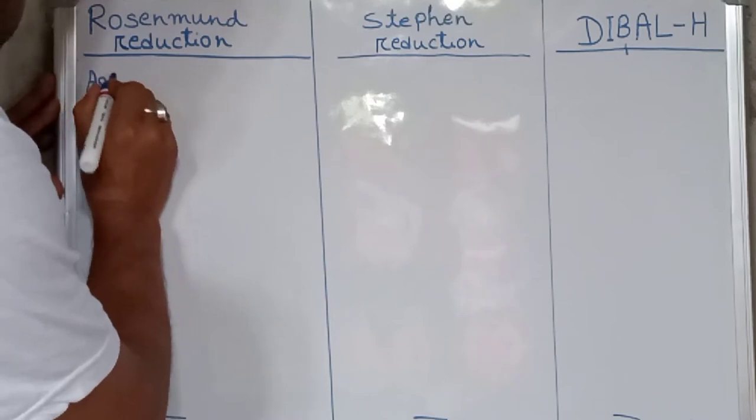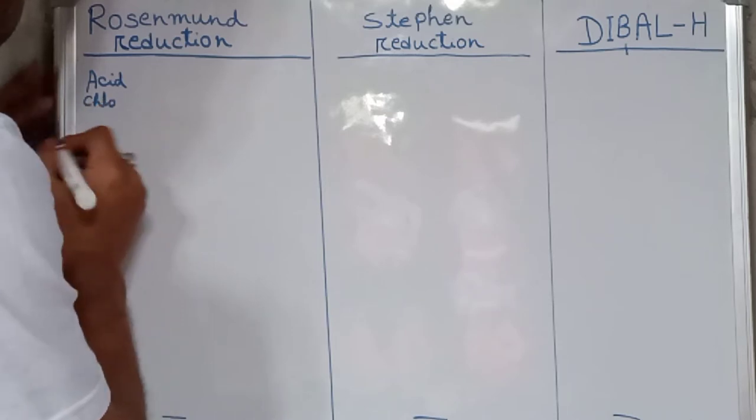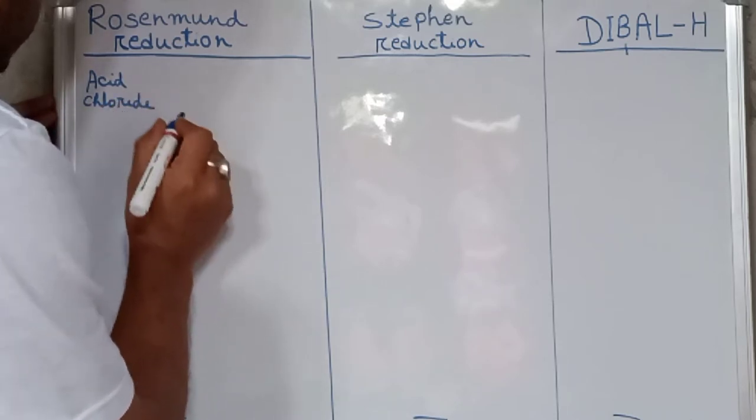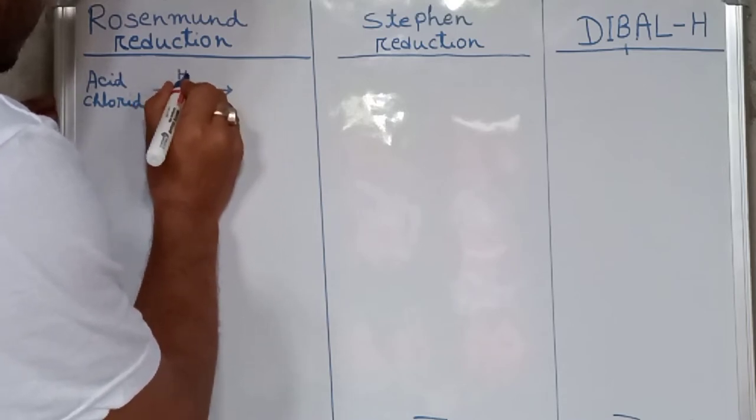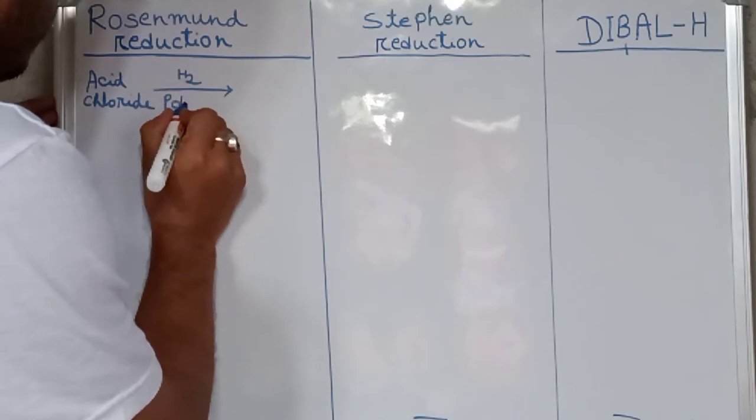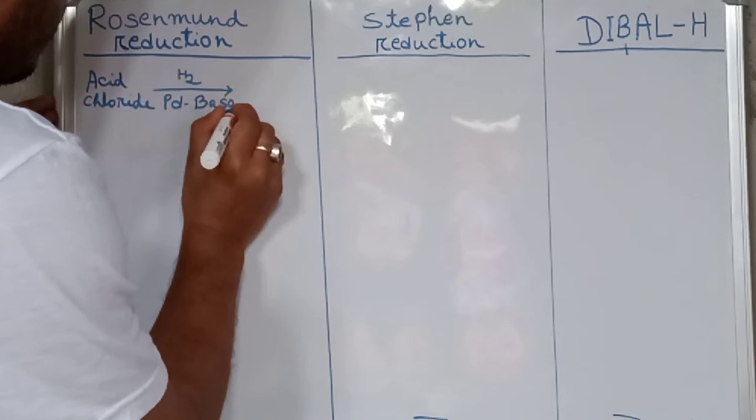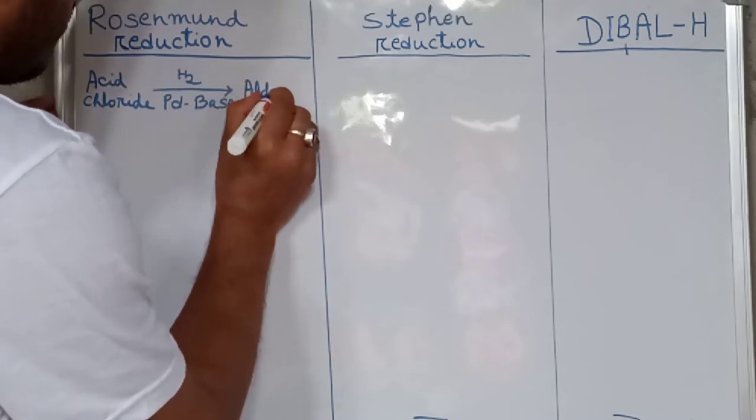Acid chloride, or acyl chloride, is hydrogenated with H2 and catalyst palladium deposited on barium sulfate. We get aldehyde.